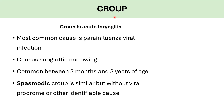Croup — very important, very high yield. Croup is acute laryngitis, which is inflammation of the larynx. The most common cause is parainfluenza viral infection. However, other viruses can cause croup — for example, influenza A and B, but those children will have higher fever and look more sick.